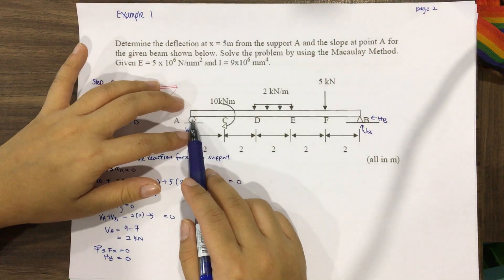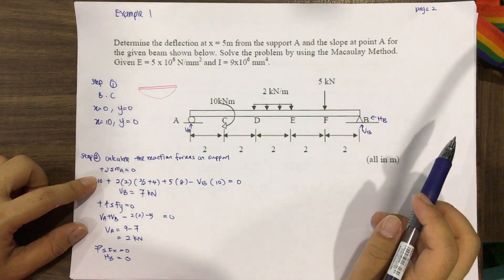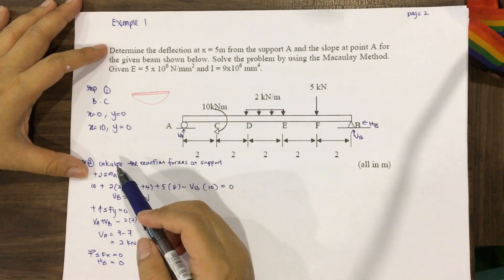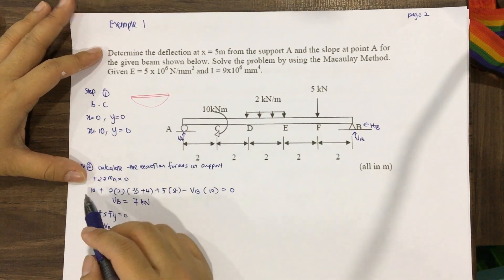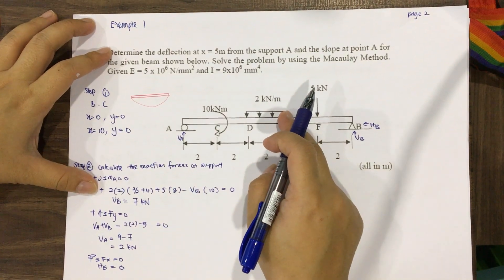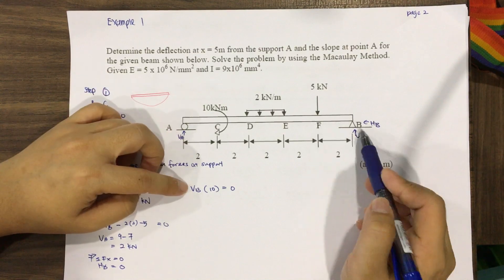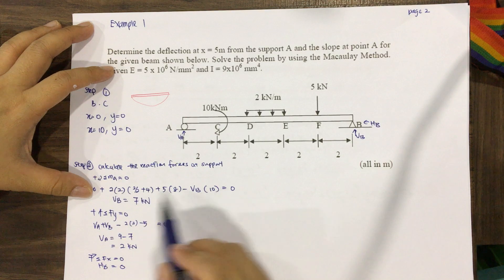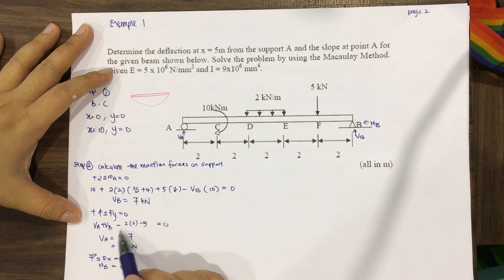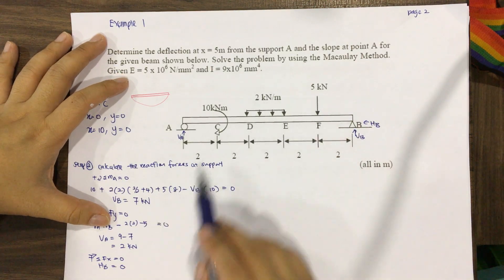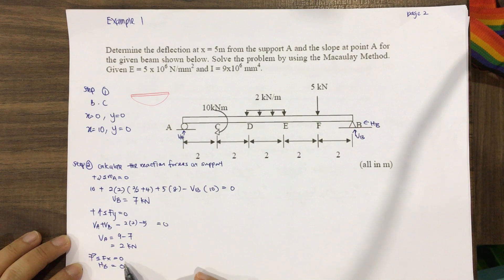Step two: calculate the reaction forces at the supports using the equation of equilibrium. Taking moments — total M_A equals zero — gives us: 10 from the moment, plus 2 times 2 times (2 over 2 plus 4), plus 5 times 8, minus V_B times 10 equals zero. Solving gives V_B equal to 7 kilonewtons. Then from total F_Y equals zero: V_A plus V_B minus 2 times 2 minus 5 equals zero, giving V_A equal to 2 kilonewtons. From total F_X equals zero, H_B equals zero.